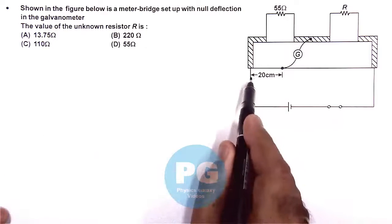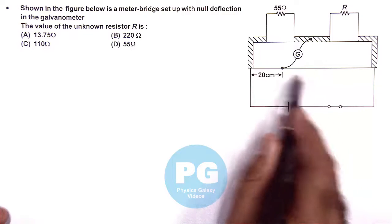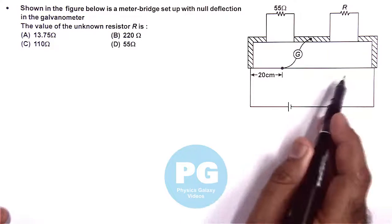If the balance length is 20 centimeters, then the remaining length on the meter bridge wire is 80 centimeters.